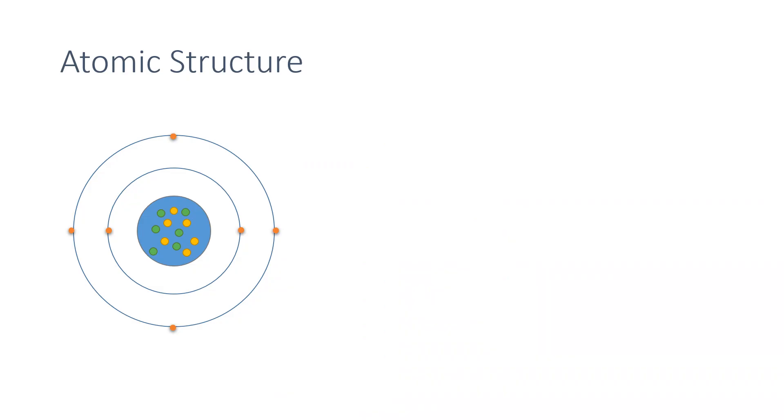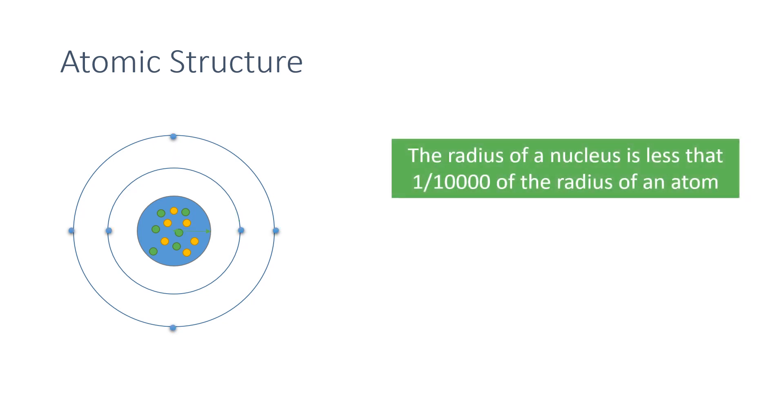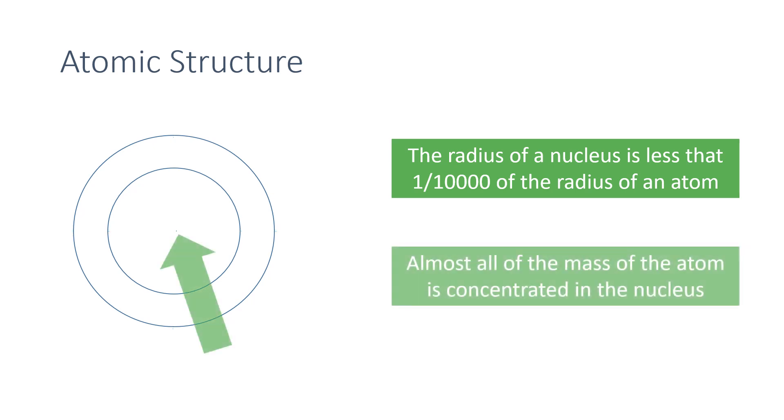Atoms are very small with a radius of about 0.1 nanometers, which is 1 times 10 to the minus 10 meters. The radius of a nucleus is less than one ten-thousandth of that of the atom. It's about 1 times 10 to the minus 14 meters, and almost all of the mass of an atom is contained within the nucleus.